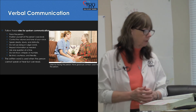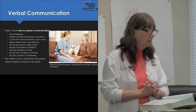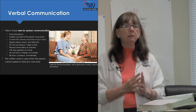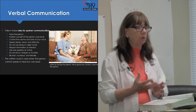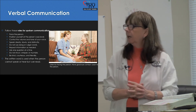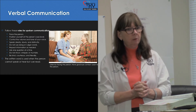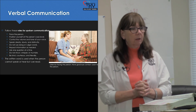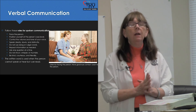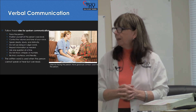For verbal communication, follow these rules. Always face the person. Position yourself at eye level. Control the volume and tone of your voice. Speak clearly, slowly, and distinctly. If they don't hear you, speak a little bit louder. Let them see your face — let them watch your lips move when you talk. Do not use slang or vulgar words. Repeat information as needed. Ask one question at a time — if you ask 'are you cold, do you want me to get you a sweater?' that's two questions. Don't shout, whisper, or mumble. Be kind, courteous, and friendly.